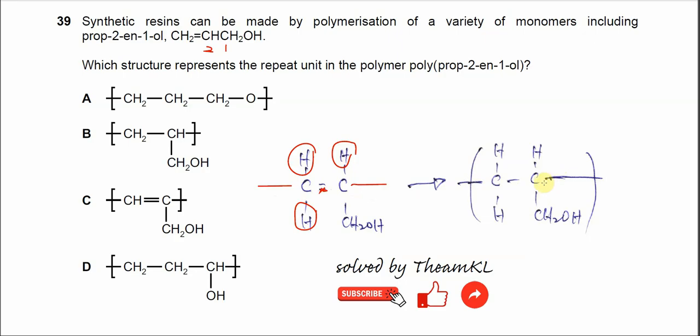So you check—eventually it's B. This is the structure with the repeat unit in the polymer poly(prop-2-en-1-ol). That's all, thank you.